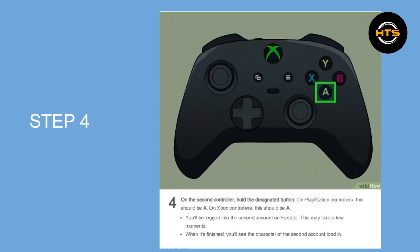Step 4 is on the second controller — hold the designated button. On PlayStation controllers, this should be X. On Xbox controllers, this should be A. You'll be logged into the second account on Fortnite. This may take a few moments.